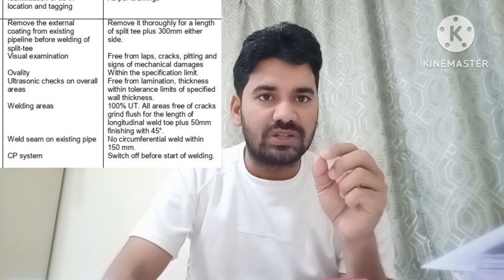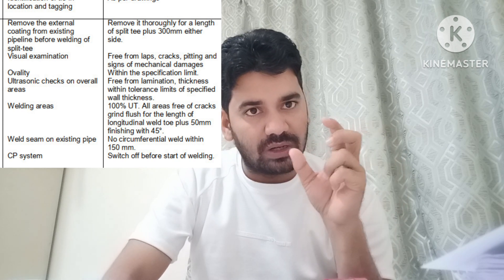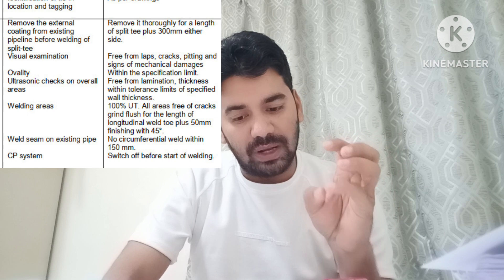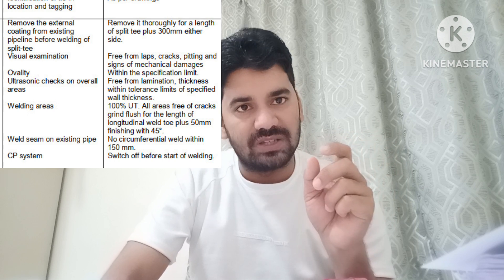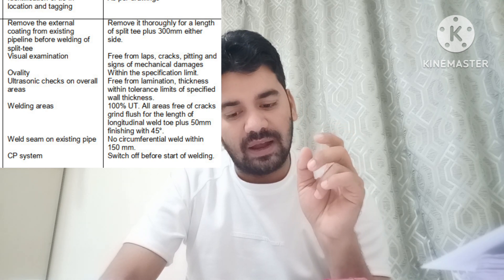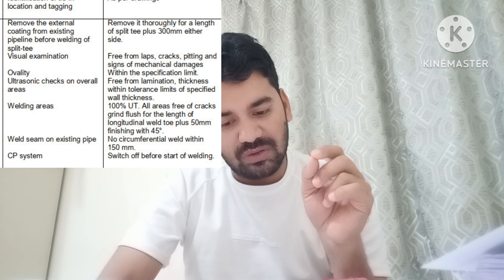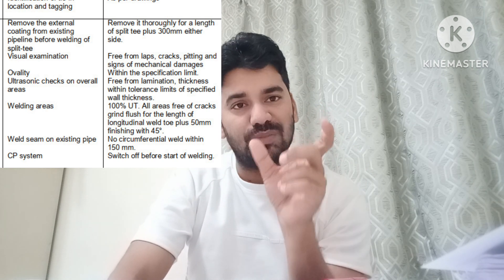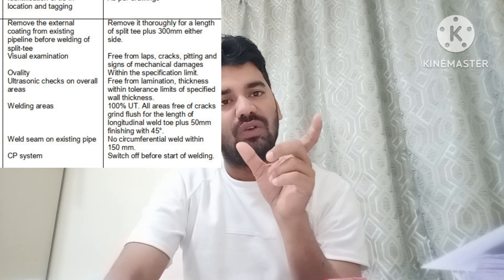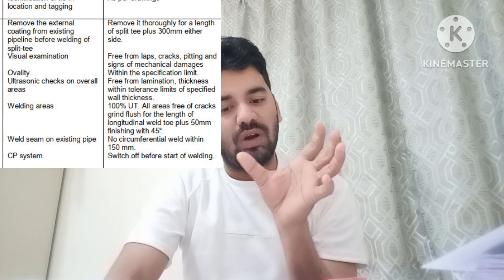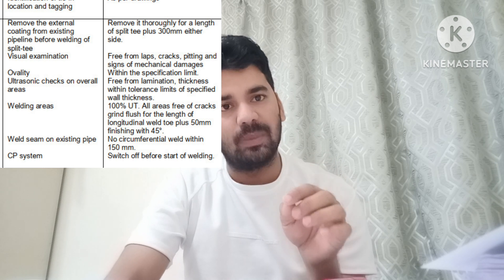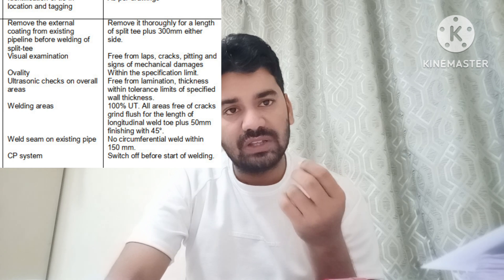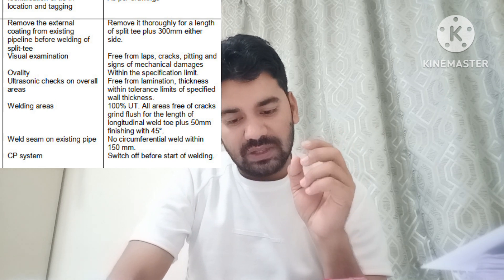Clean 300 mm extra on both sides. Then perform visual examination of the existing pipe at the hot tap tie-in location. That area must be free from laps, cracks, pitting, and signs of mechanical damage within the specification limit. If the split T length is 1.5 meters, you clean 2.1 meters, and that entire area must be free from mechanical damage, slag, pitting, laps, and cracks. The probability must also be within the specification limit as defined in the procedure.